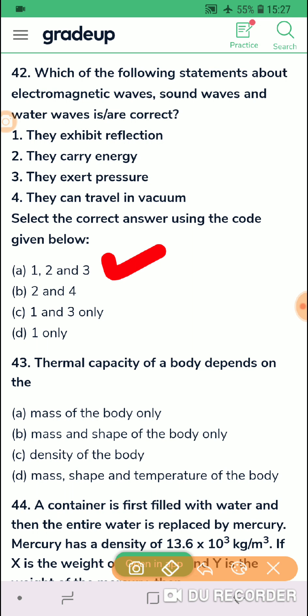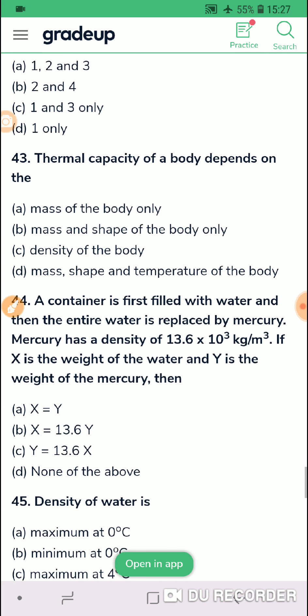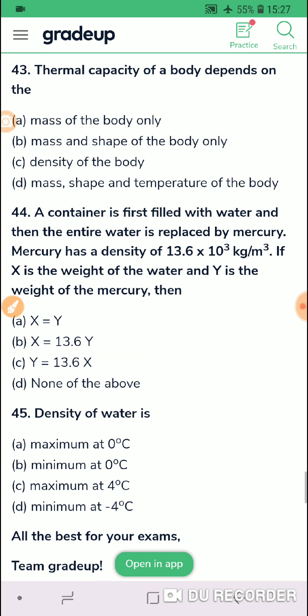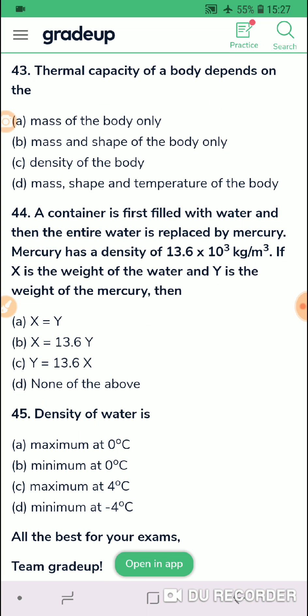Thermal capacity of a body depends on the. So thermal capacity, what is basically a thermal capacity? Thermal capacity means the amount of energy required to raise the temperature of any object by 1 degree Celsius. That is per unit rising temperature. That is the way. So it depends upon mass of the body. It does not depend upon the shape and size. It does not, because once we are telling that it does not depend upon shape and size, so of course volume is out of consideration. So in my opinion, mass of the body is the option correct.